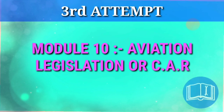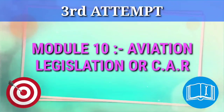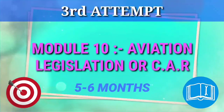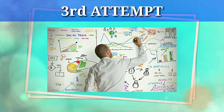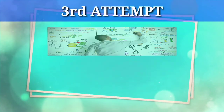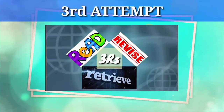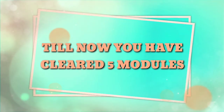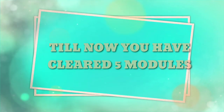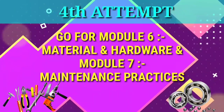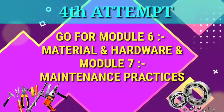In the third attempt, give module 10 only. Your aim should not be just to clear the module, but to truly understand it — knowing everything about module 10 can take 5 to 6 months. Follow the 3 rules of success: read, remember, and most importantly revise. Till now you have cleared 5 modules. For the 4th attempt, you are fully confident, so go for module 6 and 7. Or if you feel underpowered, give one of them and module 6 and 7 later — because they are similar yet difficult and you need to remember many things together. My personal suggestion is to give module 6 only.